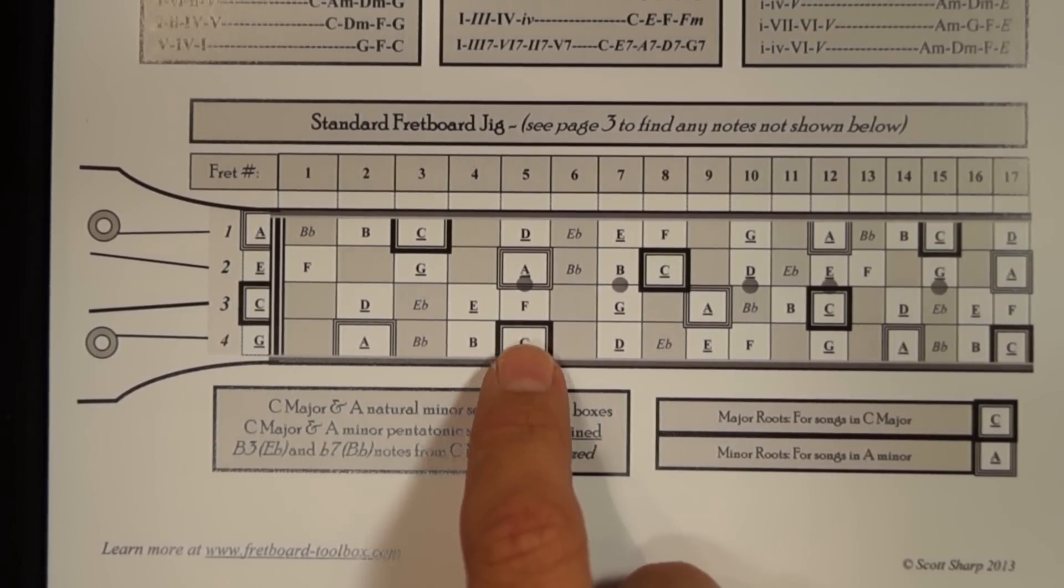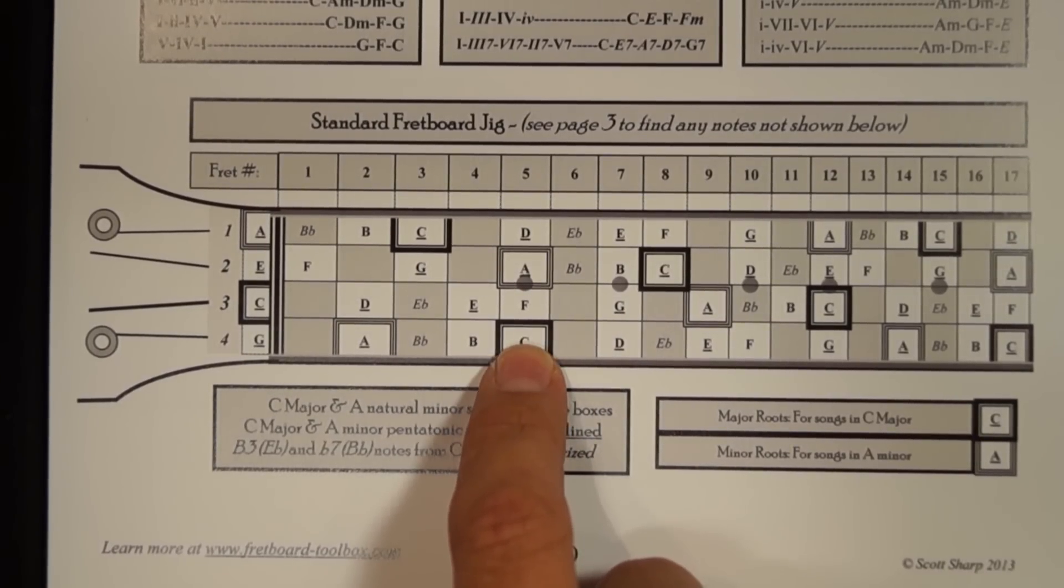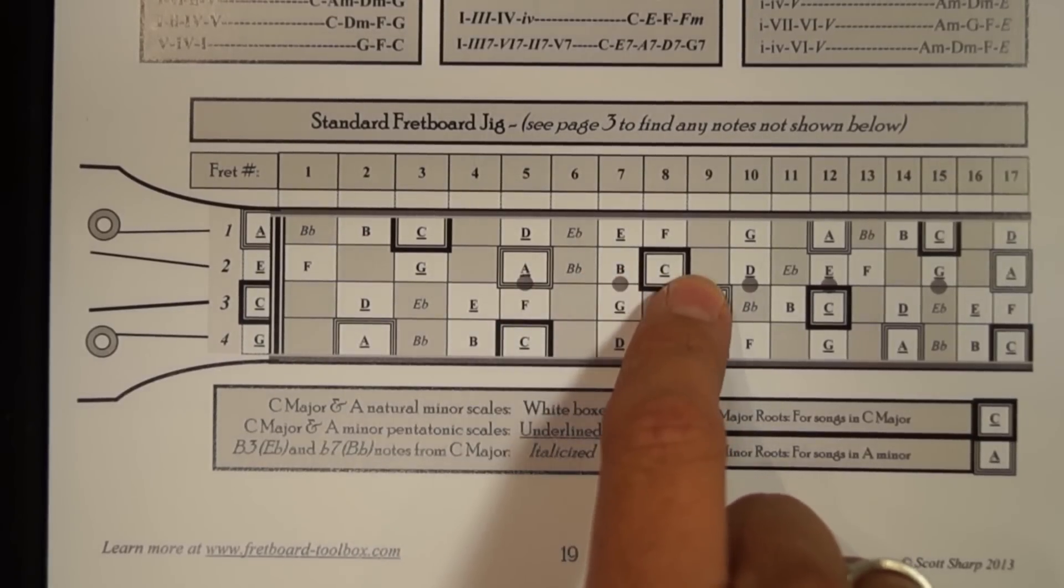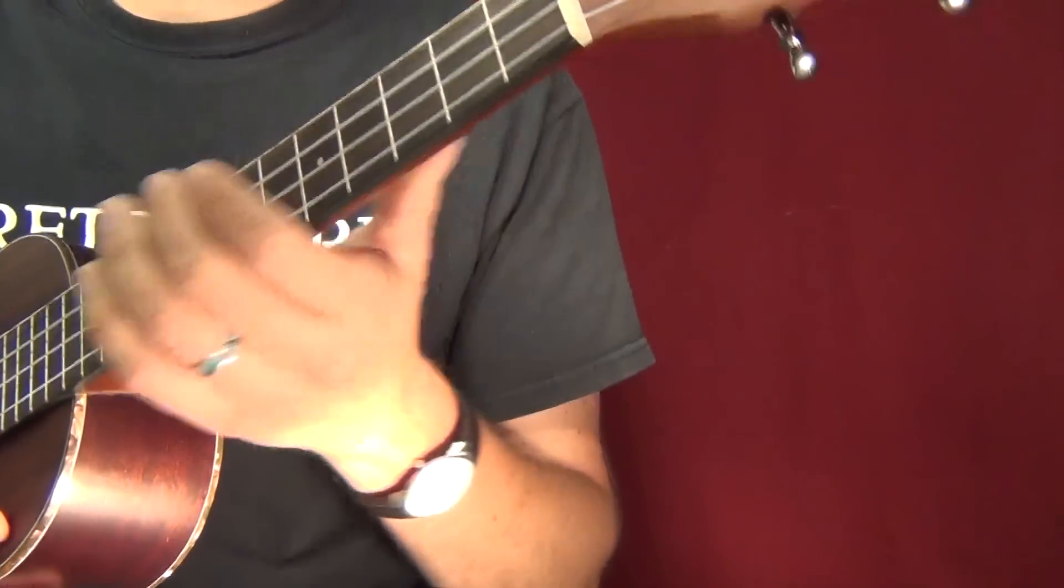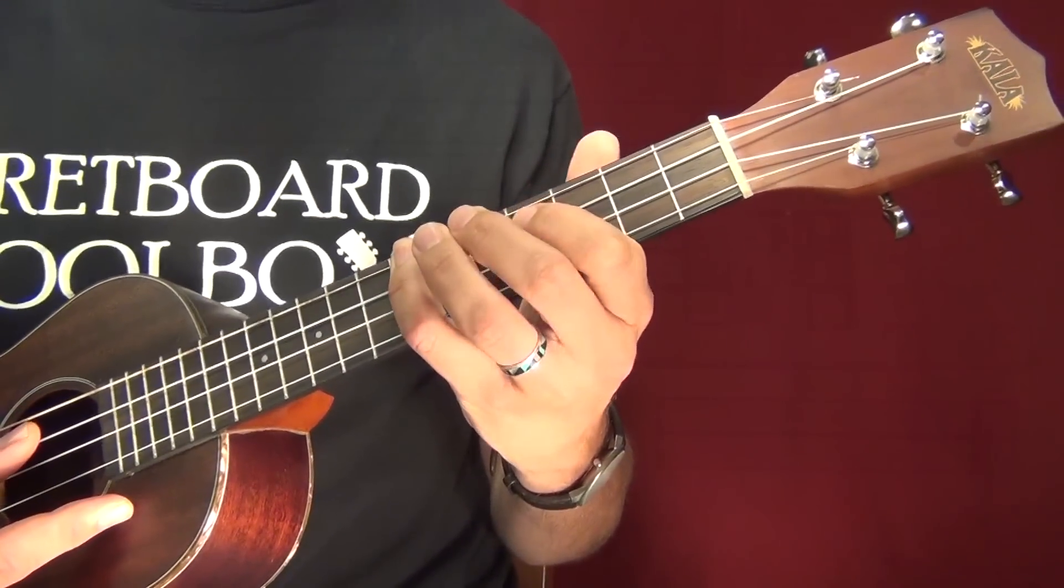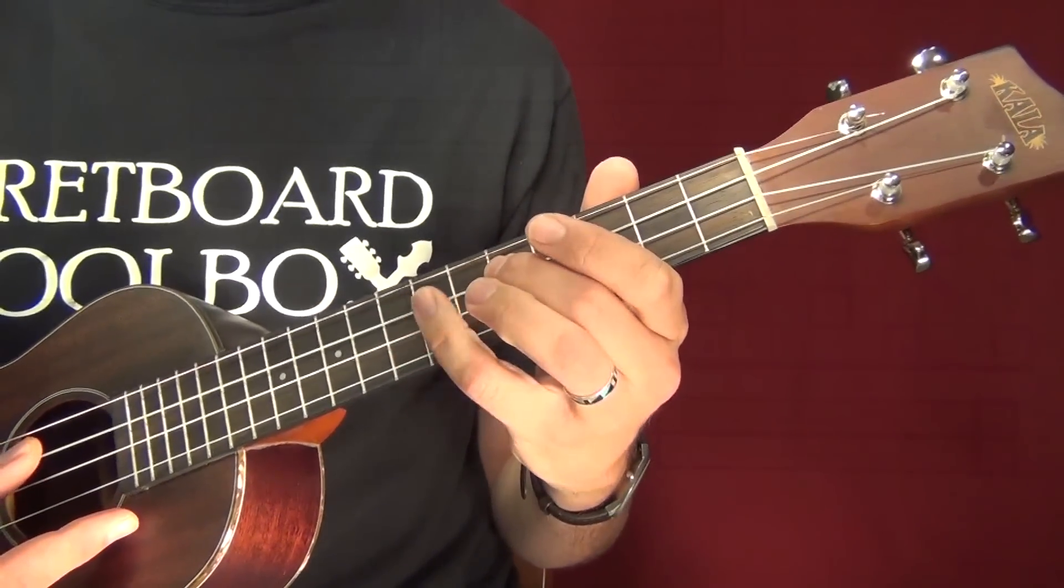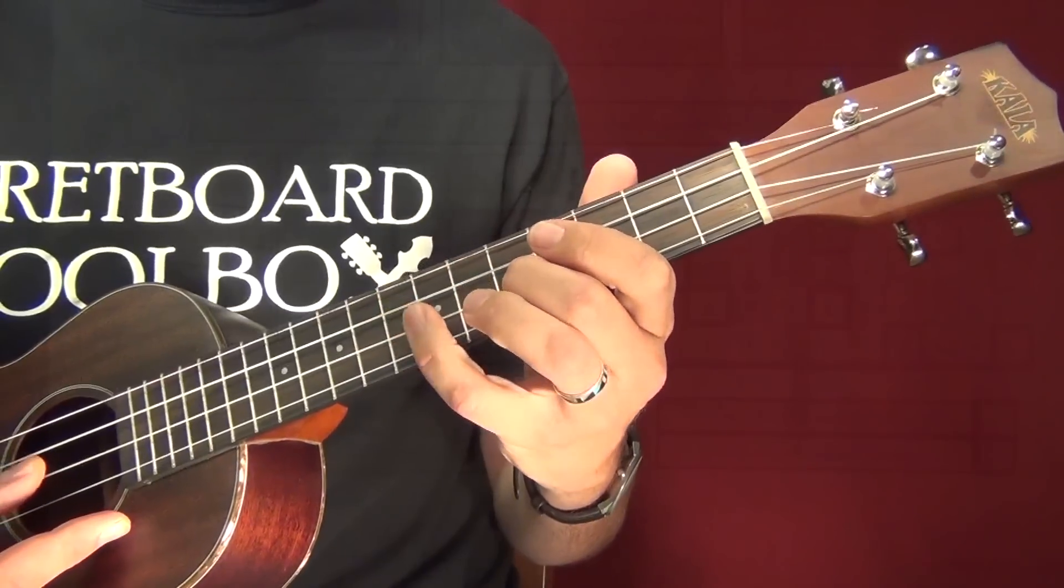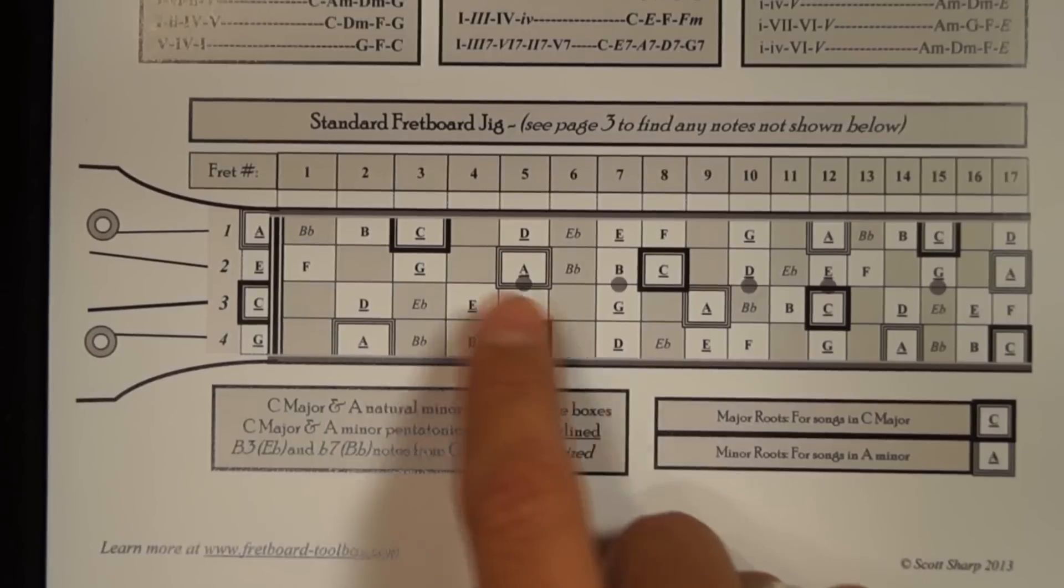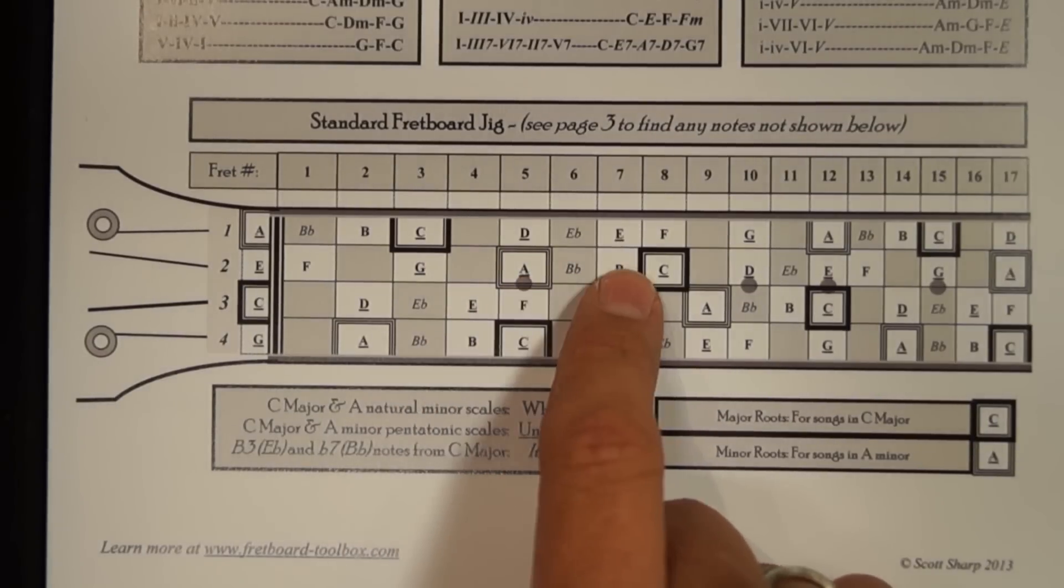So if I want to play a C major scale, I can play C, D, E, F, G, A, B, and C. And that would look like this. So on the fifth fret here, we've got here's C, D, E, F, G, A, B, C. So that was just C, D, E, F, G, A, B, C.